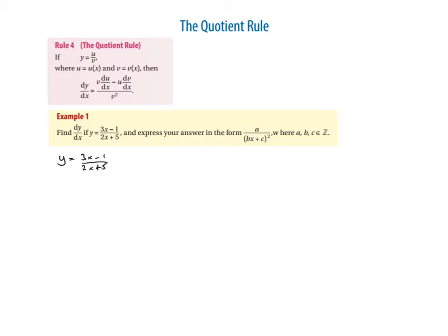We know it's a quotient because we see it's a fraction with x's over x's. So we're going to make a u and a v. u is equal to 3x minus 1, so du/dx is equal to 3. v is equal to 2x plus 5, and dv/dx is equal to 2.